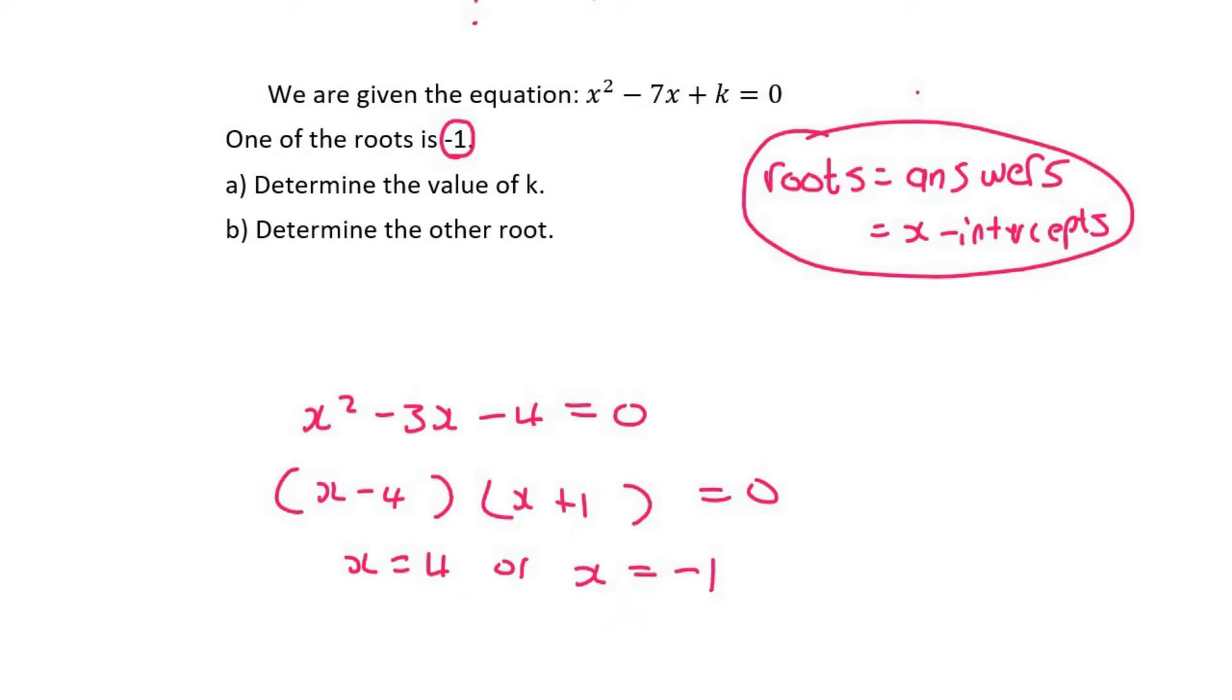Now what that actually means is that you were trying to make this side equal to zero. And mathematically, there are two numbers that you could use that will make that true, either four or minus one.